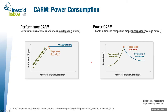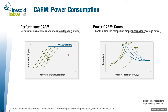In the cache-aware roofline model, we have several bandwidth slopes for each level of the memory hierarchy. This means we will have several peaks or hills for each memory level in our power cache-aware roofline model. Going from L1 to L2 to L3, power consumption raises, but for DRAM it is actually lower.